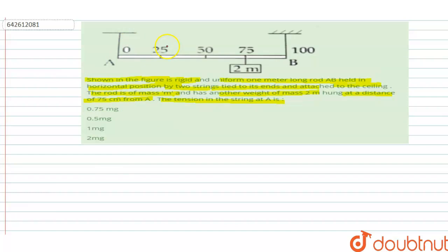First, draw the free body diagram of this question. The 2M mass has weight acting downward, and this is equal to 2Mg. The rod is uniform.